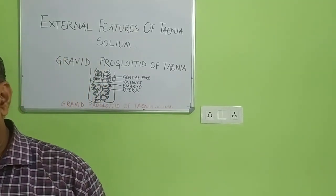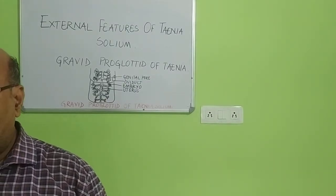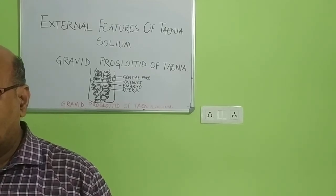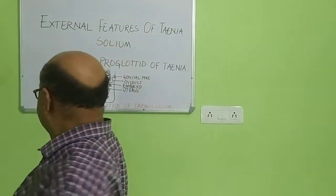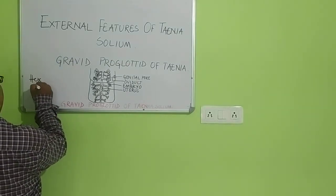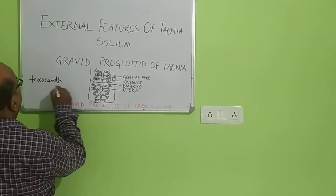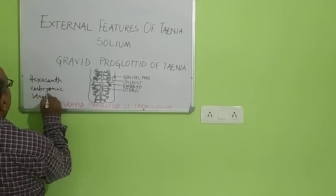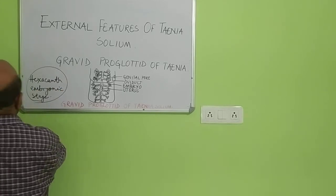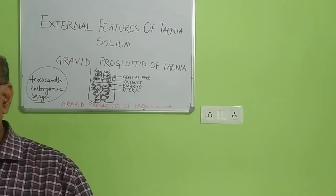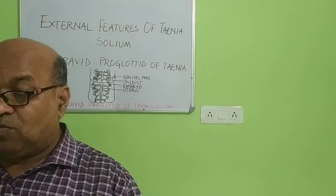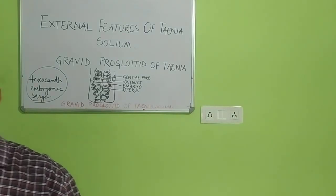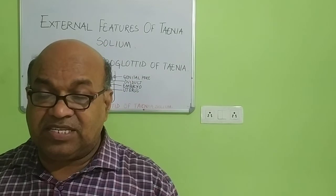At this stage the eggs are covered by a hard calcareous shell and bear six small pointed hooks. This stage is known as the hexacanth embryo stage. This hexacanth embryonic stage is a very remarkable feature in the body of Taenia.